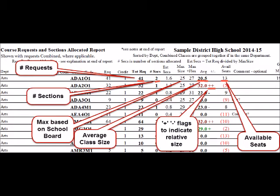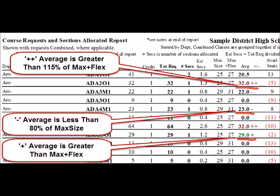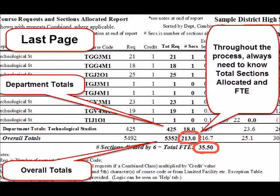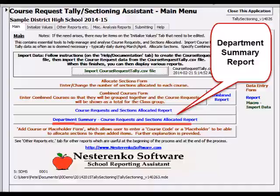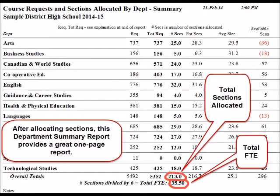The columns shown are: Requests, Sections, Max Size, Average Size, and Available Seats. Also some plus and minus flags — they're handy when looking for relatively large or relatively small classes. Overall requests and sections allocated, as well as FTE, are shown on the last page. Now the one-page department summary report becomes very interesting and very useful.